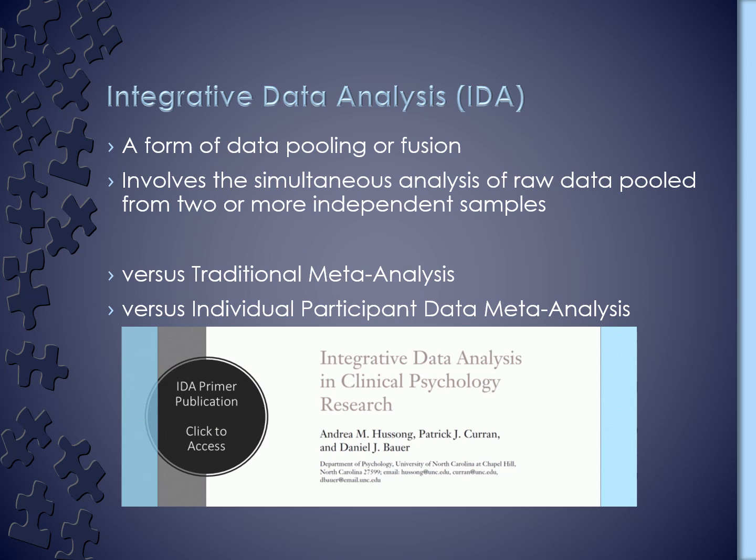IDA, on the other hand, is really trying to take the data from individual participants in a data set and put them together so that we're answering questions that aren't based on summary statistics, but on individual participants' answers. This is closer to more recent advances in individual participant data meta-analysis, but the difference is really around measurement. Individual participant data meta-analysis may pay a little bit less attention to some of the issues in measurement harmonization, which is a big focal point for integrated data analysis. One of the primers we have put out on helping people understand what IDA is and what it does is called 'Integrated Data Analysis and Clinical Psychology Research.'